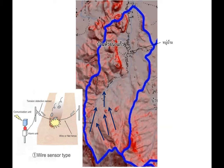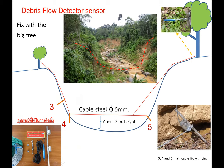This is the debris flow sensor — they call it the wire sensor type. It is installed in the possible flow channel in order to detect debris flow, and then sends the signal or warning message to the village. This is the village and the black dots are locations of houses. This is an example of the debris flow detection sensor used to detect flow in the possible flow channel.